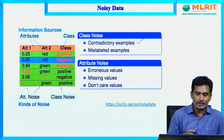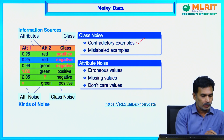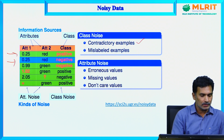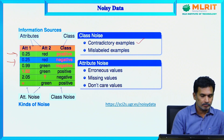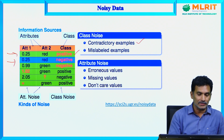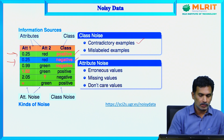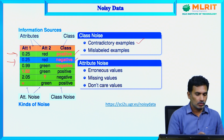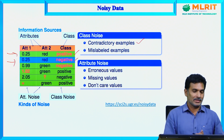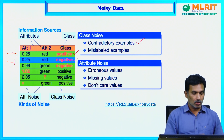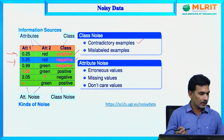The first type is contradictory examples. You can see the first two records where attribute 1 values are 0.5 and 0.25, and attribute 2 values are both red. However, the first record is labeled as positive and the second record is labeled as negative. Even though the attribute values are the same, their class labels contradict each other.